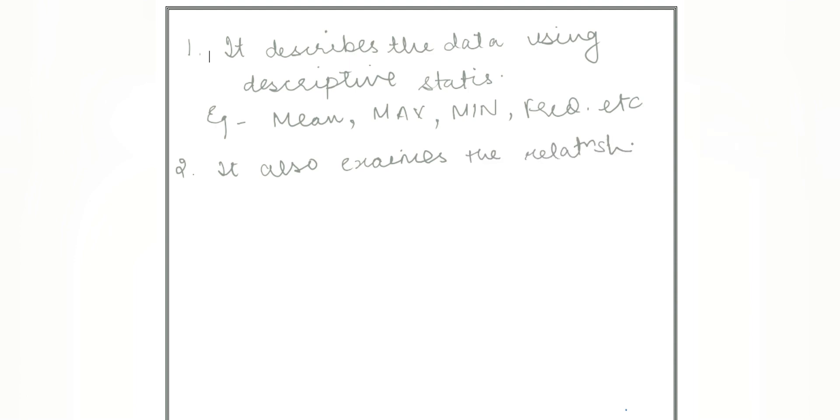The first way, it describes the data using descriptive stats. For example, mean, frequency, max, minimum, etc. It also examines the relationship between variables which can be done with the help of correlation analysis, regression analysis and few statistical tools.